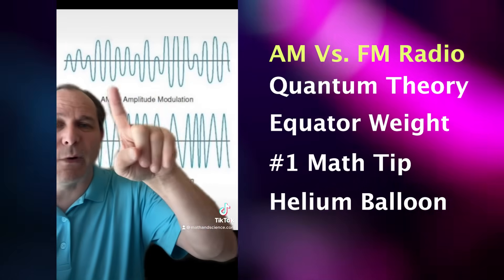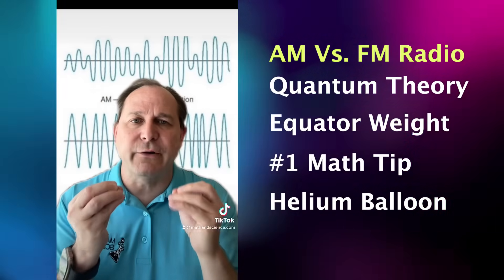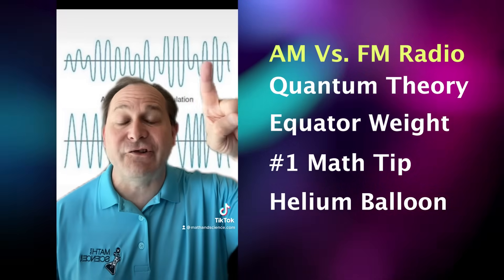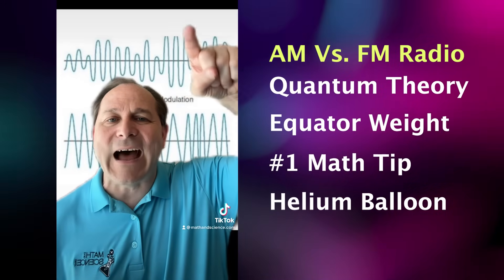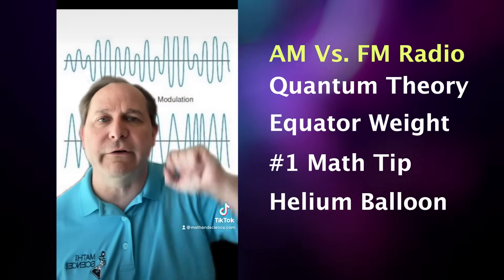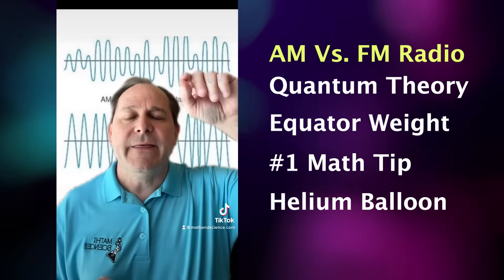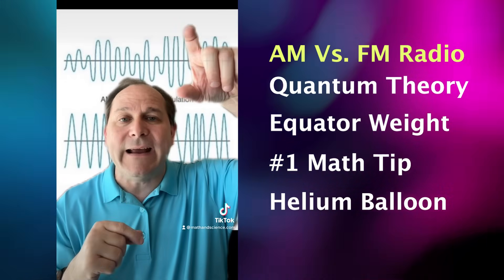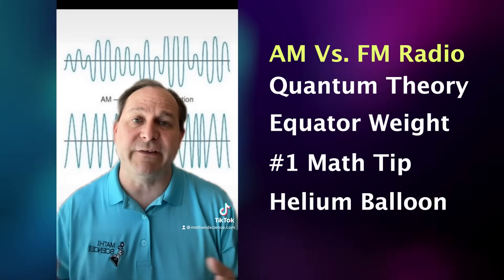AM — amplitude modulation — is represented in the top graph here. What it means is when I speak into the microphone and it's sent out into the air as an electromagnetic wave, the information is actually carried by changing the amplitude. The amplitude is the height of the wave. So you see how the wave is taller here, but shorter here and taller here. As I speak louder and more softly, that information goes out into the air as an electromagnetic wave carried by the changes in the amplitude in lockstep with the changes in my voice.